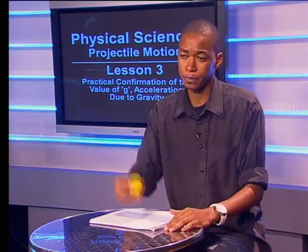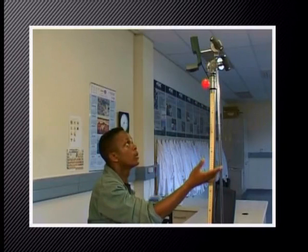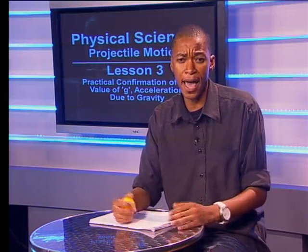Let's confirm that g really is 9.8 meters per second squared. For simplicity, we will use only the downward motion of the ball. To do this, we use a motion detector. A motion detector measures the velocity of an object moving past it. Let's join Siwe as she explains how we can measure the value of g in the lab.